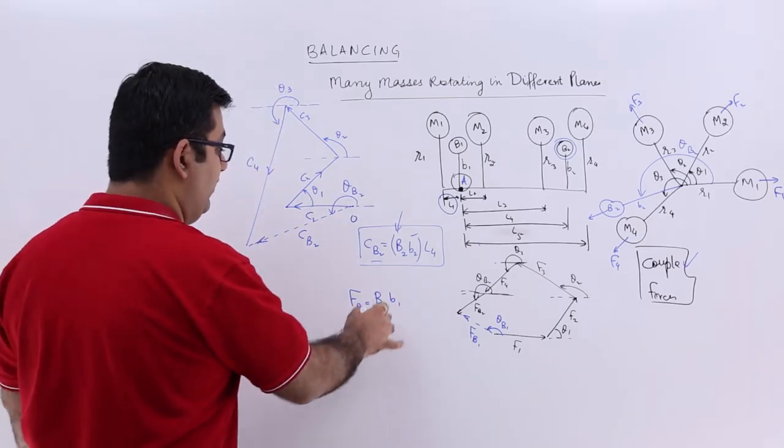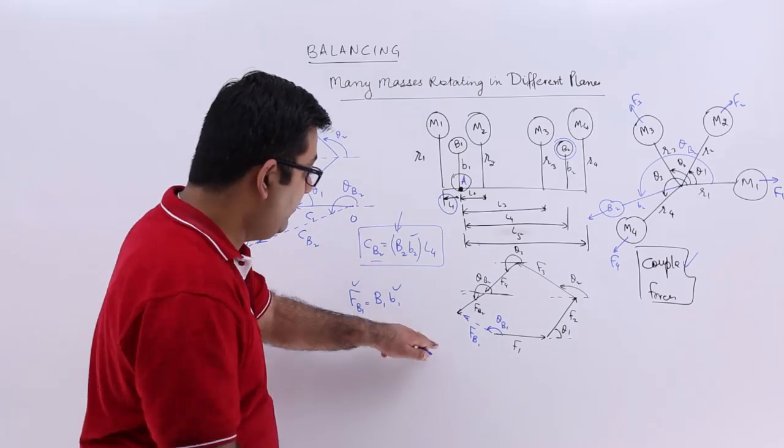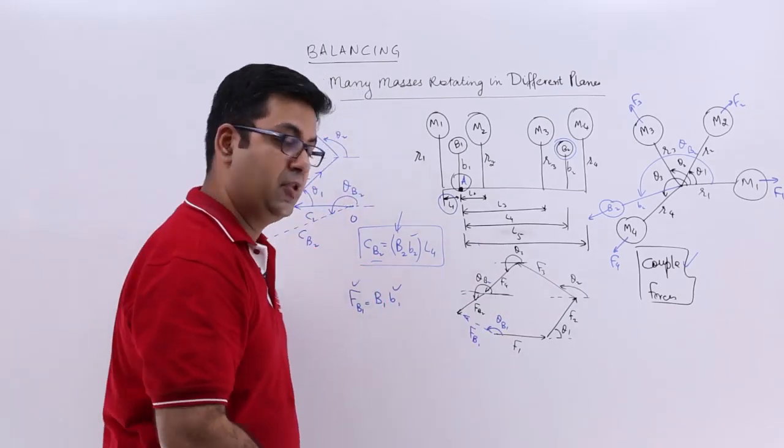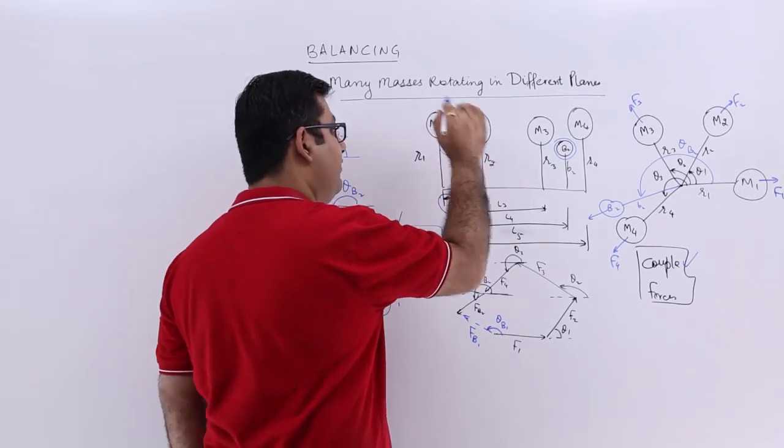So this FB1 has to be equal to capital B1 into small b1. There is no need of the length. So B1 is known to us. This we can calculate with the help of this diagram measurement and the scale that we take to draw all these forces. And from this we can calculate B1. And so now we have also got B1.